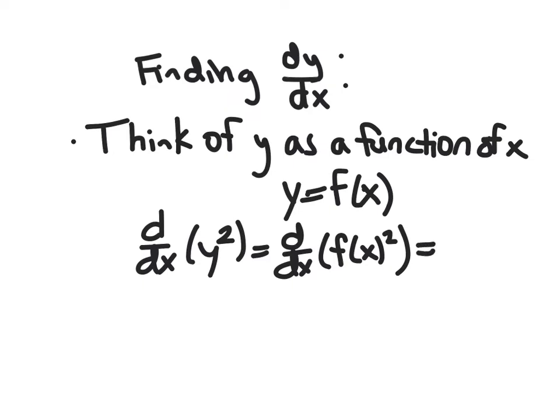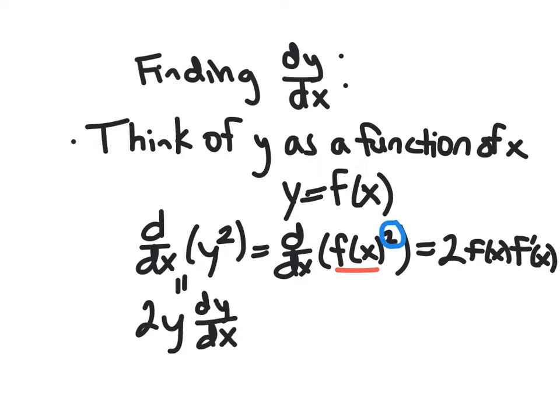And if you saw something like this, our inside function is f of x, our outside function is squaring. And so we would use the chain rule on this. So this would be 2f of x, f prime of x. And so for this reason, the derivative of y squared, we would write 2y, and then the derivative of y with respect to x. So 2y dy/dx.